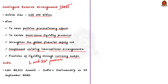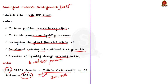The last BRICS summit, the 13th BRICS summit, was held under India's chairmanship on September 9, 2021. It was the third time India hosted a BRICS summit, after 2012 and 2016. These are all important facts to remember for prelims.